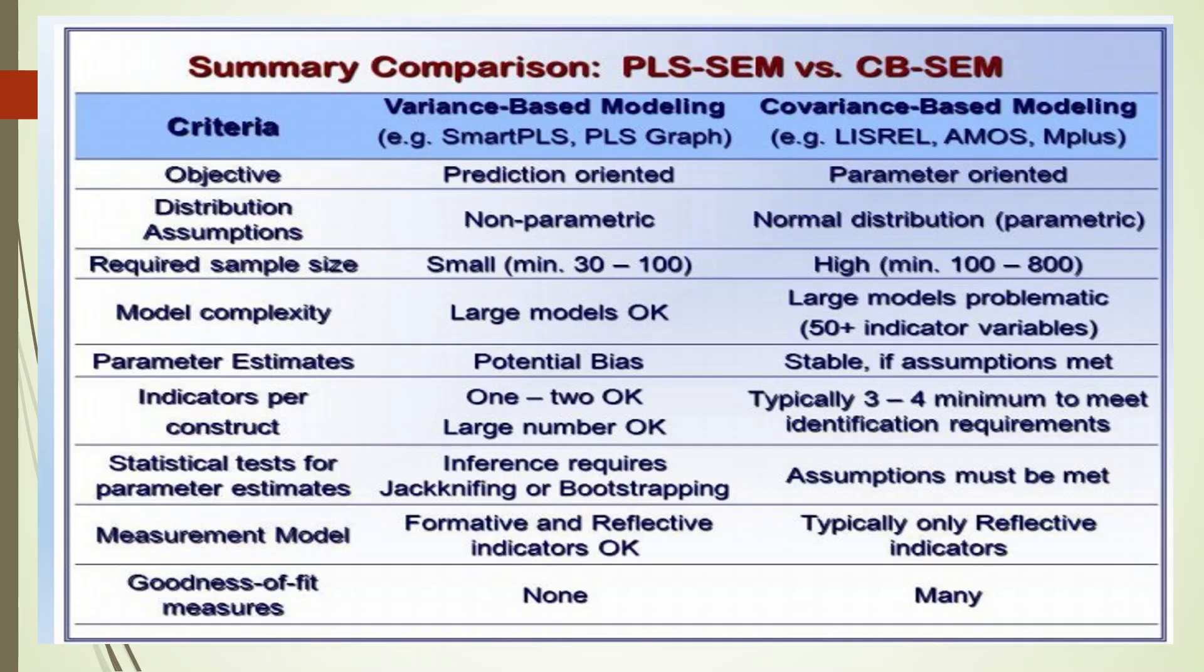Now what is the difference between PLS-SEM and covariance-based SEM? The basic difference is objective. The objective of PLS-SEM is prediction oriented and that's the reason we are having PLS predict menu in Smart PLS, while in case of covariance-based SEM it is more parameter oriented.